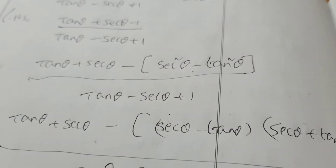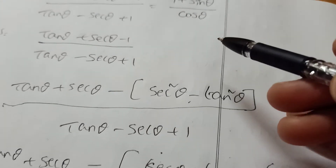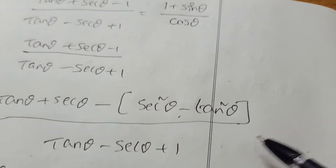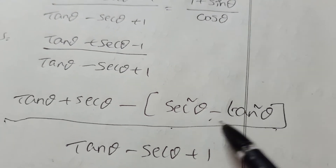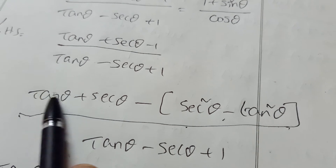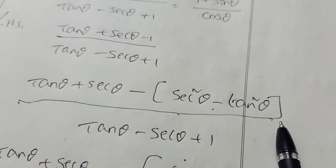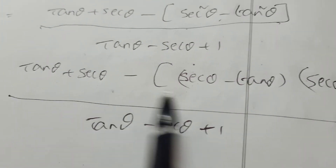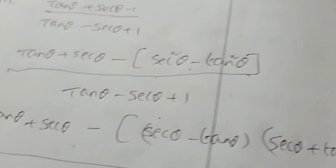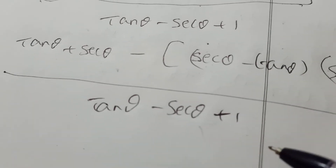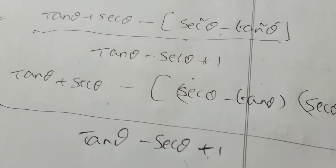This is a very important problem. The key step is replacing 1 with sec²θ minus tan²θ using the IDT formula. Then factor using difference of squares, and the denominator cancels easily. Don't change the denominator — it will cancel with the bracket term.